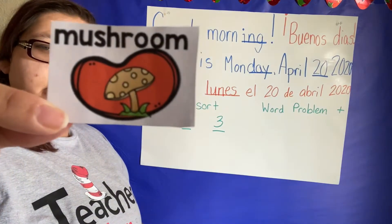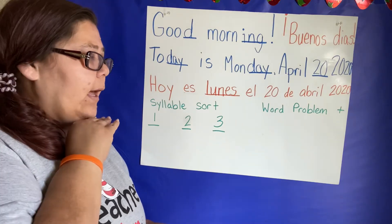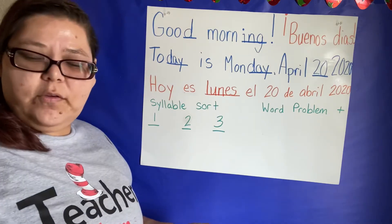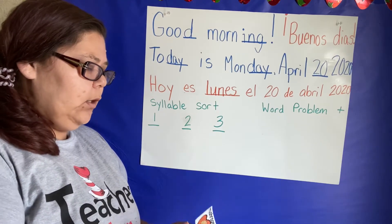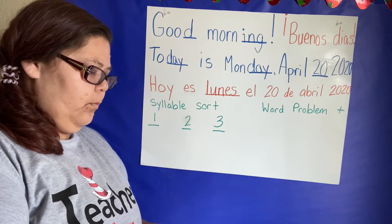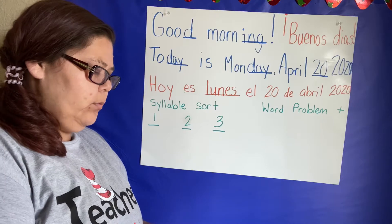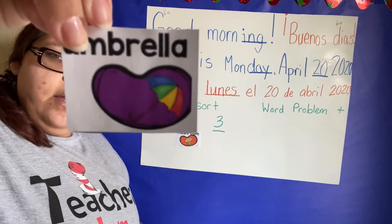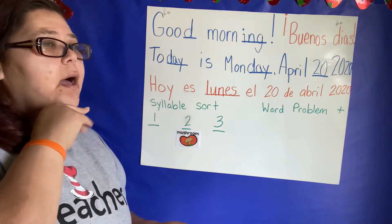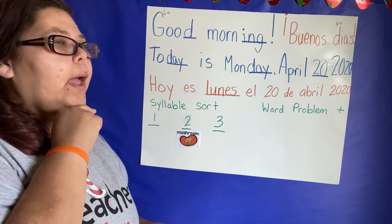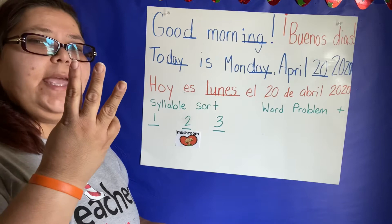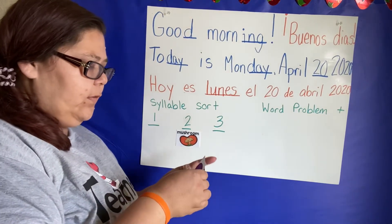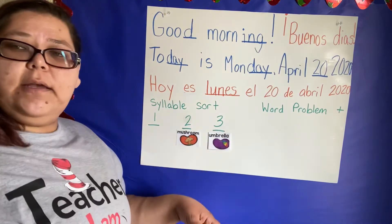We'll start with mushroom. Put your hand on your chin and let's see how many times your mouth opens. Mushroom. Two — so this is two syllables. We're going to put this one under the two syllables. Mushroom has two syllables. Next we have umbrella. Let's put our hand under our chin and feel. Umbrella. I counted three — so umbrella has three syllables. We're going to put that under the number three.